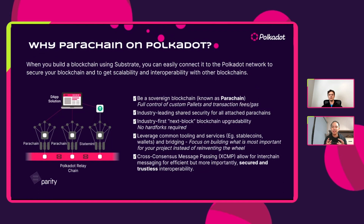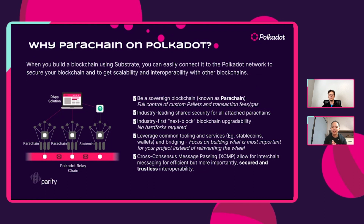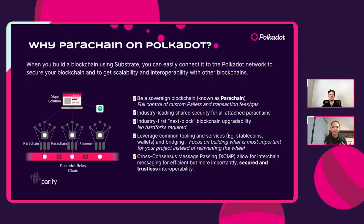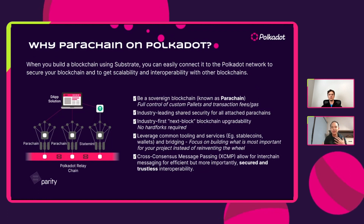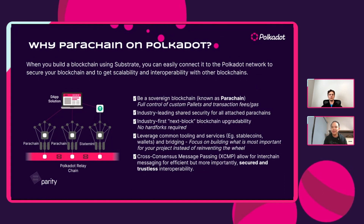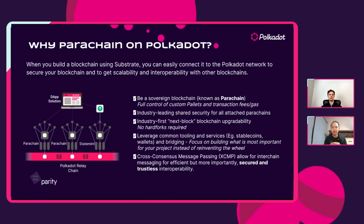A parachain, firstly, is a sovereign blockchain. That means you have full control of all your custom pallets. You may even employ different types of tokenomic design that may not even have transaction fees, or you may have full control over how you can subsidize transaction fees. In some cases, you may want a smart contract blockchain; in others, you may build a dedicated app chain. The world is your oyster in terms of designing your fully sovereign blockchain.